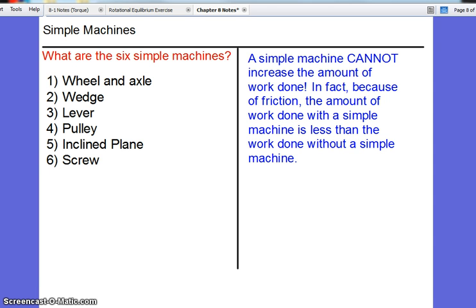A lever is anything that pivots around what we call a fulcrum. A lever would be something like a wheelbarrow because it pivots around the wheel. It could be a jack for a car, a seesaw, or anything you swing like a bat, broom, or hockey stick.